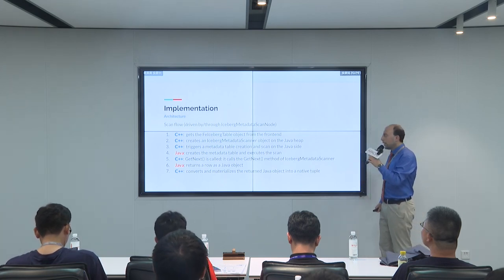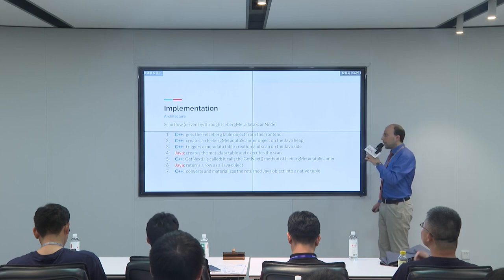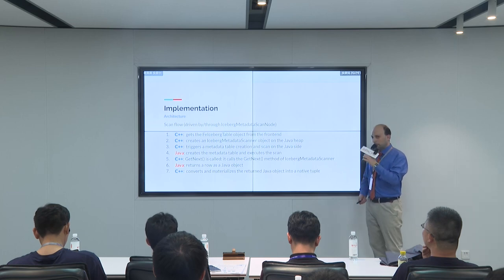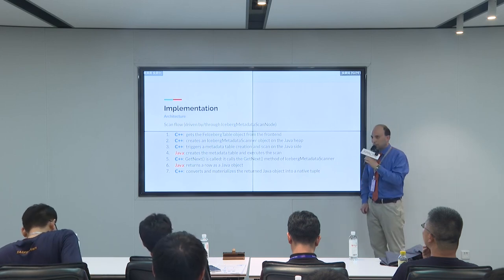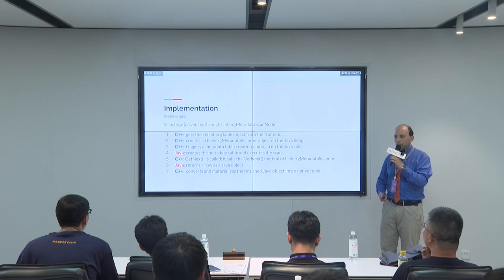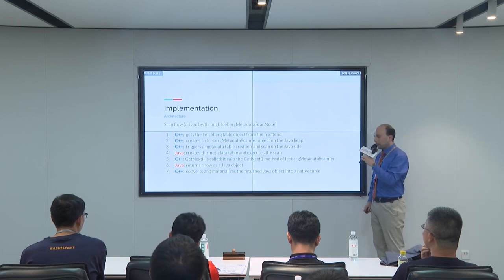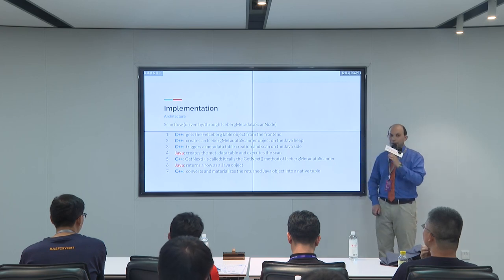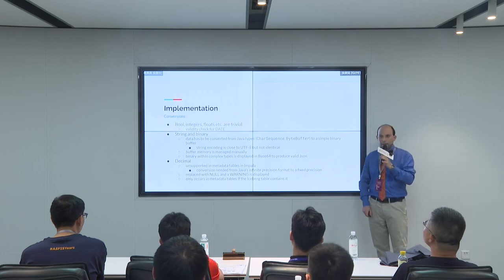Here you can see the scan flow. It starts in C++, where we get an object of type frontend Iceberg table from the frontend — the Java part of Impala. It creates an Iceberg metadata scanner object — the Java version on the Java heap — then triggers metadata table creation and reading in Java. In Impala's model, there's a getNext function which you call to get the next row from the table. When the C++ class's getNext method is called, it calls the getNext method of the Java class, Java returns a row, which we then convert into our native representation.